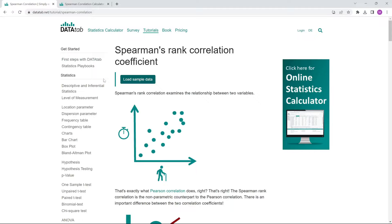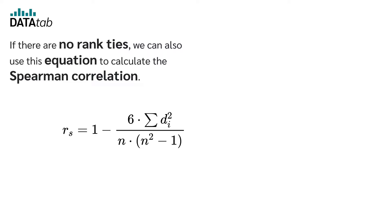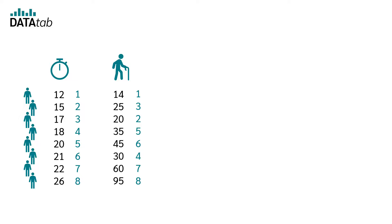If you like, you can download the dataset. You can find the link in the video description. If there are no rank ties, we can also use this equation to calculate the Spearman correlation. n is the number of cases and d is the difference in ranks between the two variables.